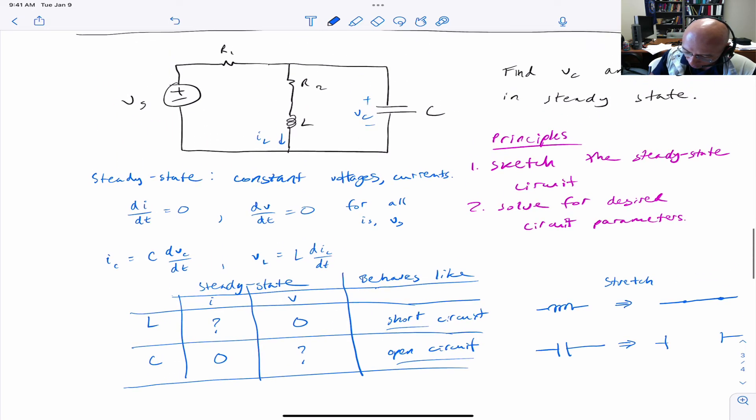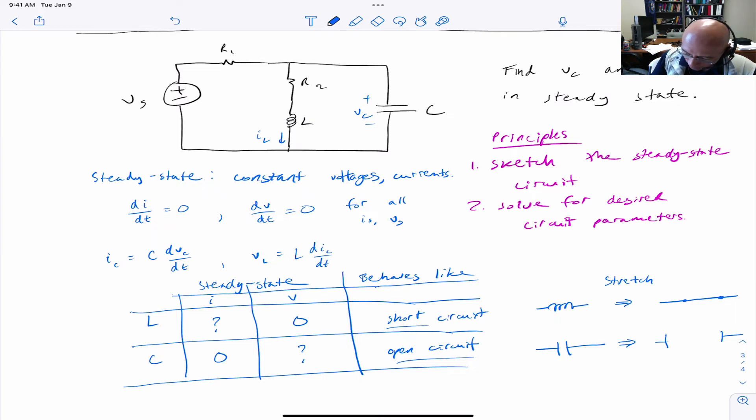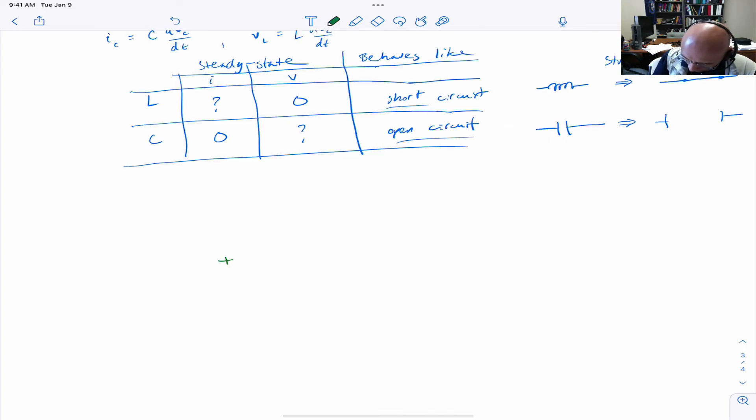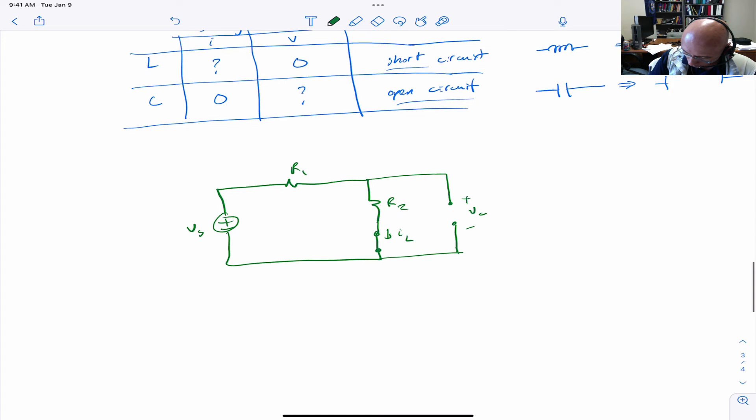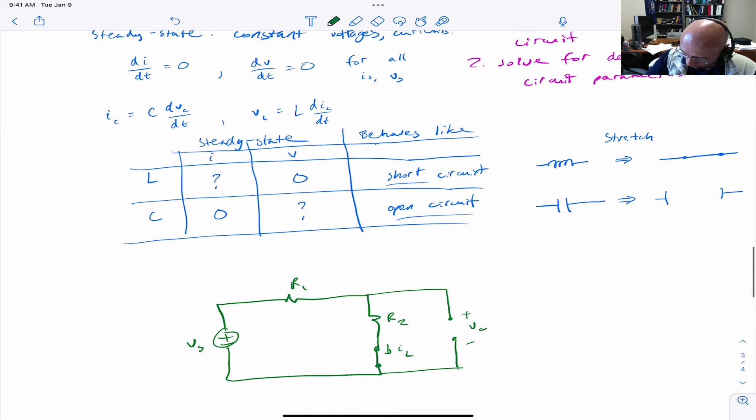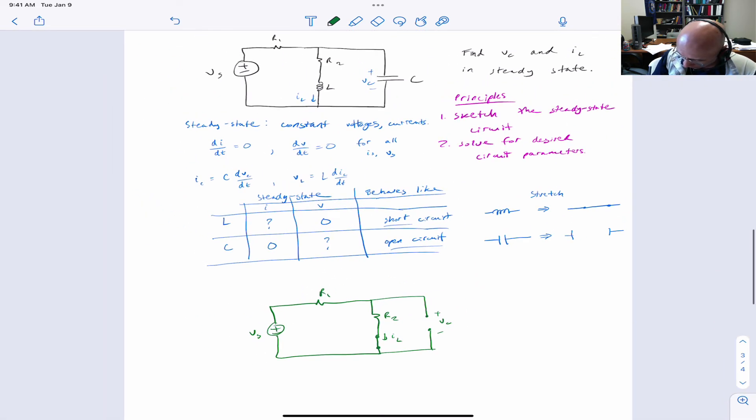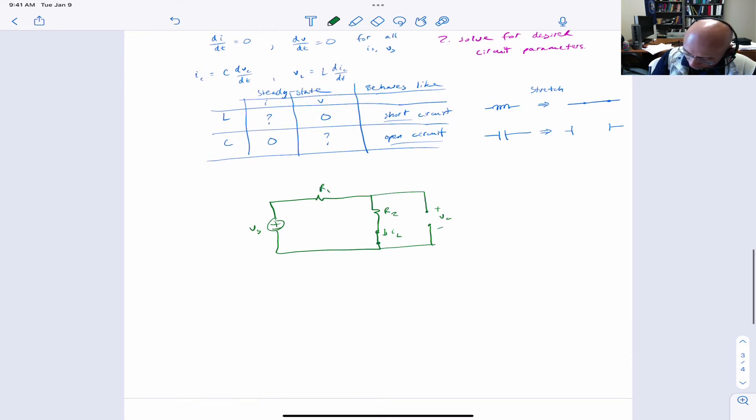So let's go back to our circuit and then we'll sketch it. In steady state, it looks like this. So let's just zoom out so we can see both. That's what it looks like. And now we can see that we can use circuit analysis techniques to get Vc and Il.